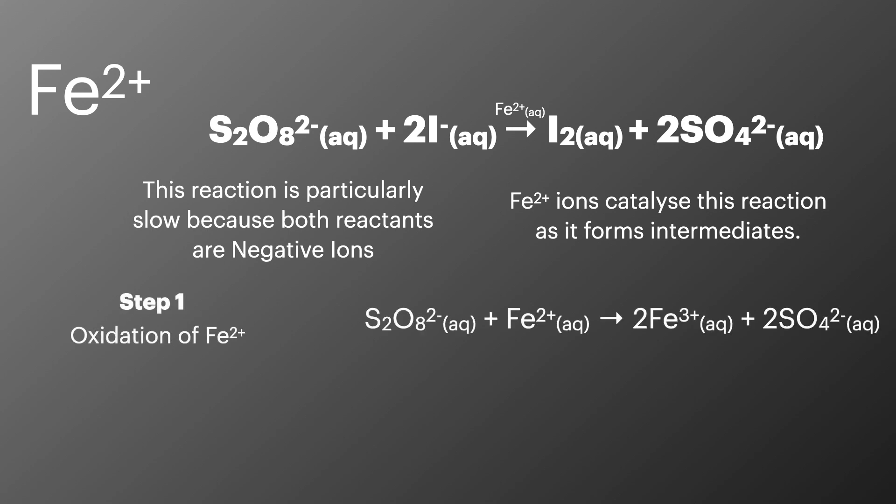In step 1 Fe2+ reacts with S2O8 to form sulphate ions. This is another example of where the variable oxidation states of iron allow it to catalyse the reaction.